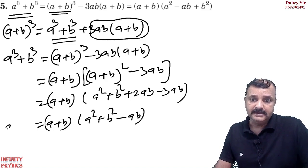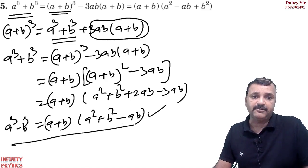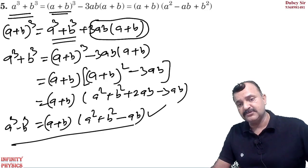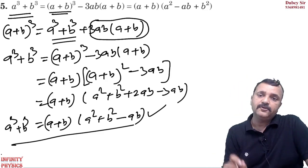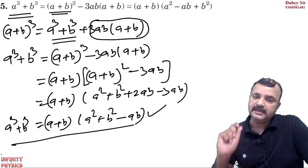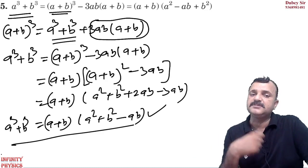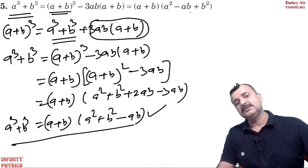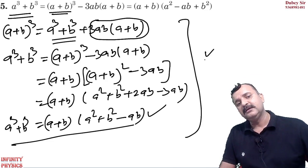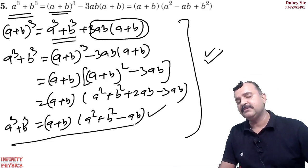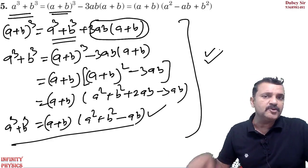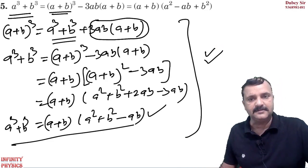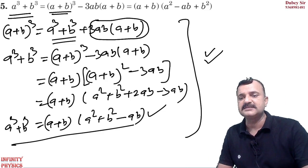So remember: this is the formula for a cube plus b cube. a³ + b³ = (a + b)(a² + b² − ab). This is a very very important formula. We have seen it many times in physics and other subjects where speed calculation is needed, and we use this formula there.